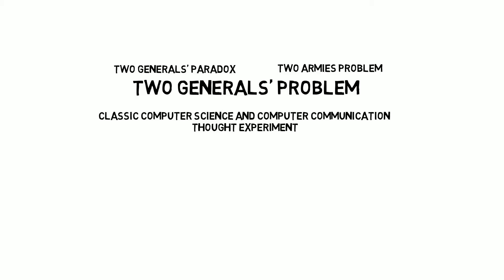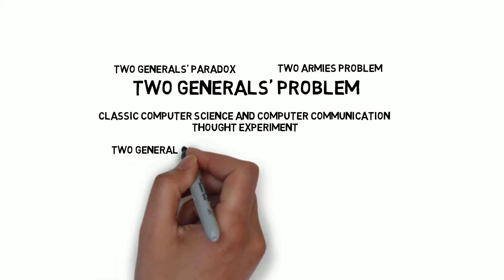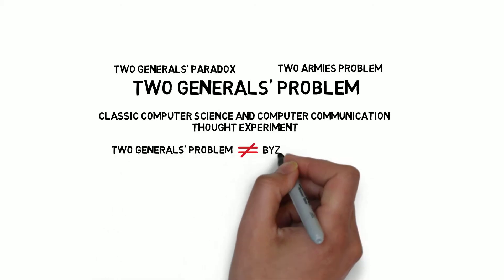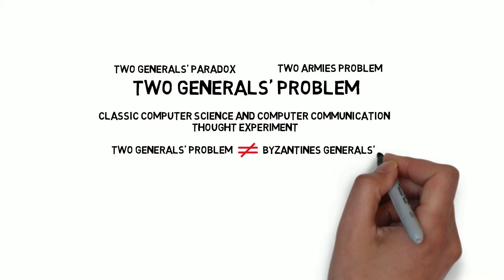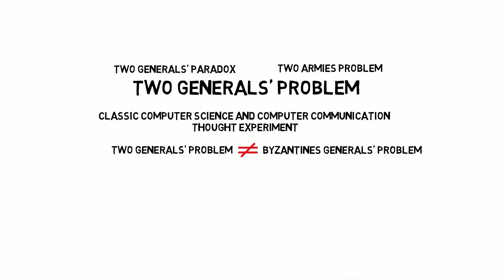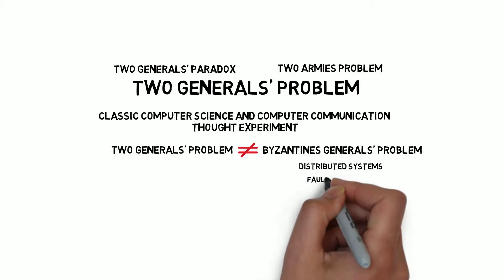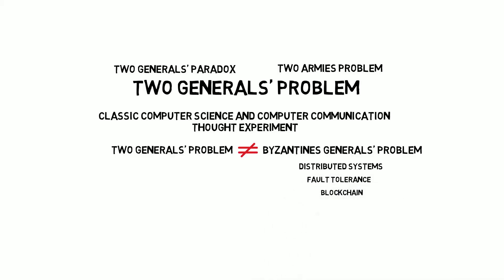First of all, to avoid any confusion, we need to remember that the two generals problem, although related to the Byzantine generals problem, is not the same. Byzantine generals problem is a more general version of the two generals problem, and it's often discussed when talking about distributed systems, fault tolerance and blockchain. We'll be talking about it in the following video.